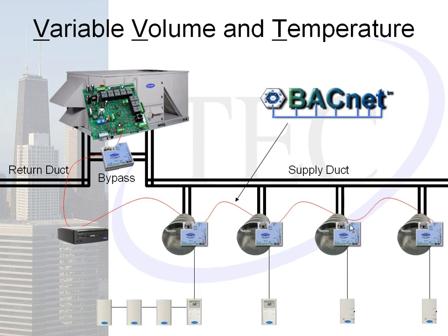Here's roughly what the system looks like: a rooftop unit, supply ductwork, a bypass duct, a controller in the rooftop unit, a controller at the bypass damper, and individual zone dampers in each zone — each with its own temperature sensor — all wired to a communication bus. One of those zone dampers is established as the linkage master, which dictates which operating mode the rooftop is in. An optional iVu web appliance can also be added to give customers more control over their facility.